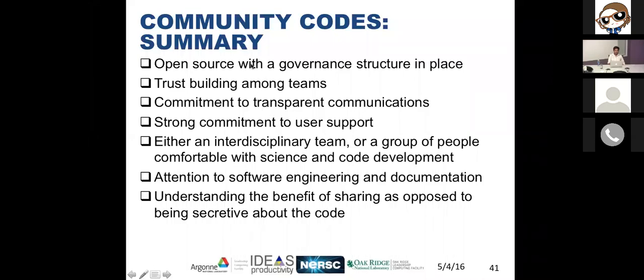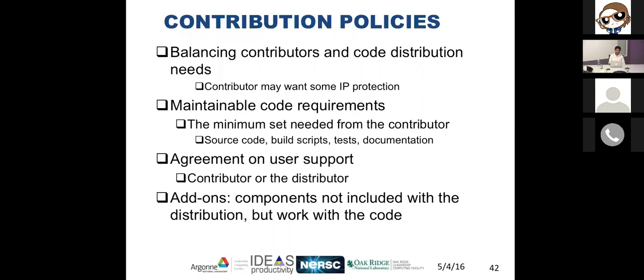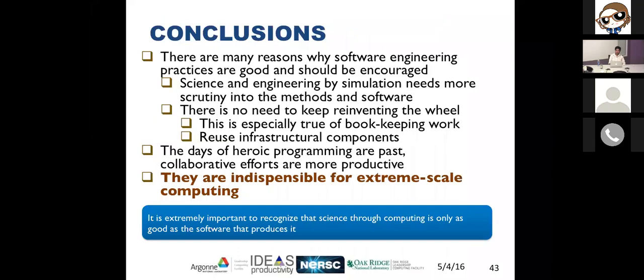In summary, community codes are most open source with governance structure in place. They invest in trust building among teams, are committed to transparent communications, and have strong commitment to user support. They either have an interdisciplinary team or people comfortable with both science and code development, pay attention to software engineering and documentation, and understand the benefit of sharing. They have balanced contributing and distribution policies, and maintainable code requirements — asking for source code, build scripts, test documentation, and agreement on user support.